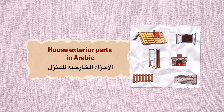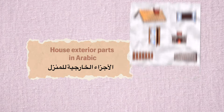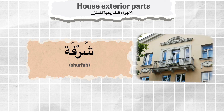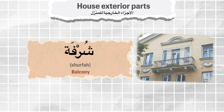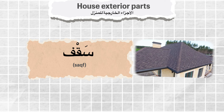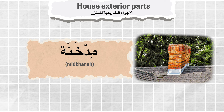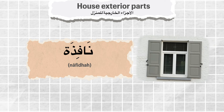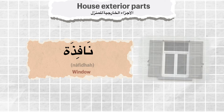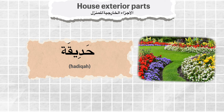House exterior parts in Arabic. شرفة — Balcony. سقف — Roof. مدخنة — Chimney. نافذة — Window. حديقة — Garden.